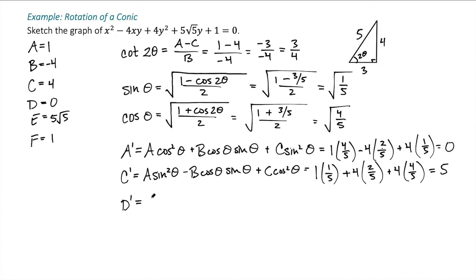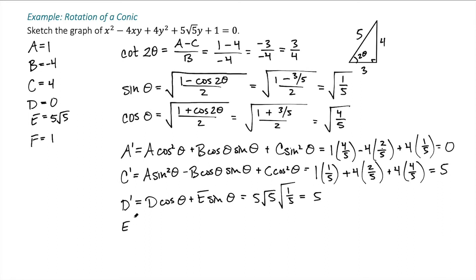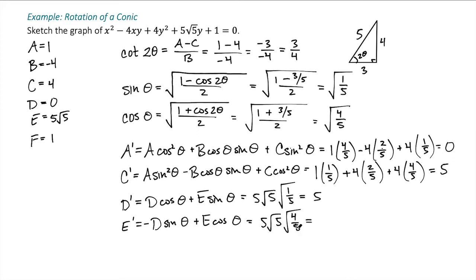For D prime, the formula is D cosine θ plus E sine θ. D is zero, so that term vanishes. E is 5 root 5 times sine θ, which is root 1 over 5 — those simplify to give 5. For E prime, the formula is negative D sine θ plus E cosine θ. Again D is zero, so I get E, which is 5 root 5, times cosine θ, which is the square root of 4 fifths. The square roots of 5 cancel, leaving 5 times 2, or 10. Finally, F prime equals F, which is 1.